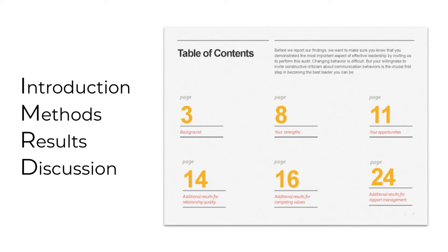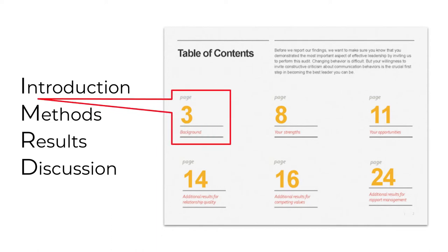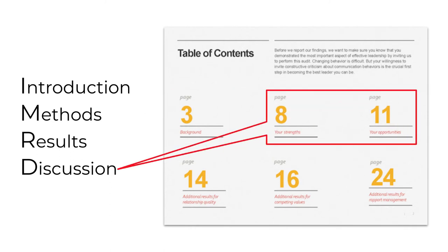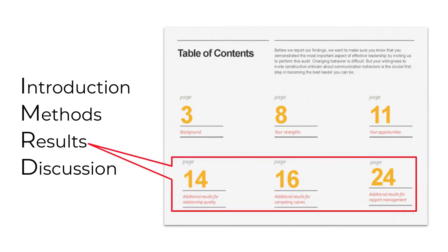You're far more likely to see those words as the complete headings in an academic paper than in an industry report. What you see in this sample are six pages of background instead of an introduction and a methods section, six pages headed 'your strengths and your opportunities' instead of a discussion section, and 11 pages of additional results for a results section. Let's look at these in a little more detail.